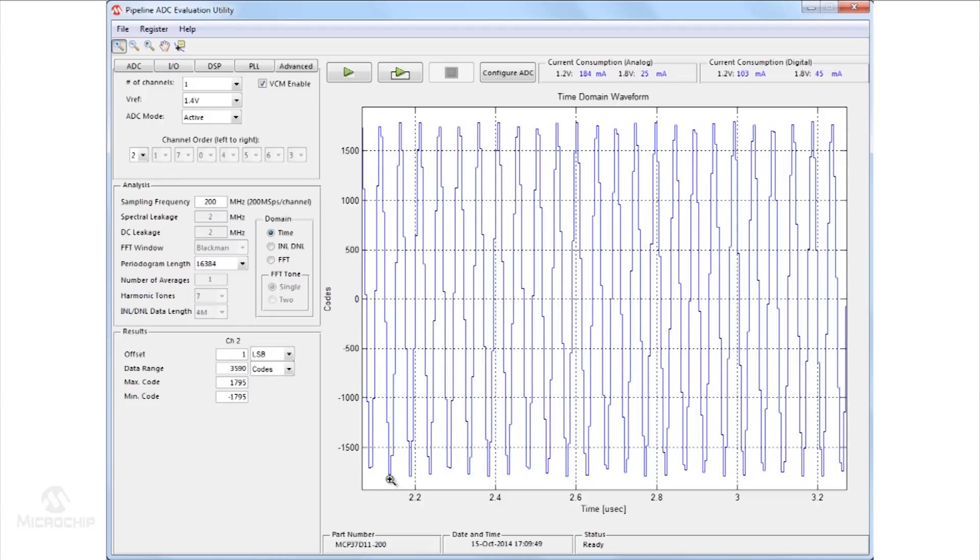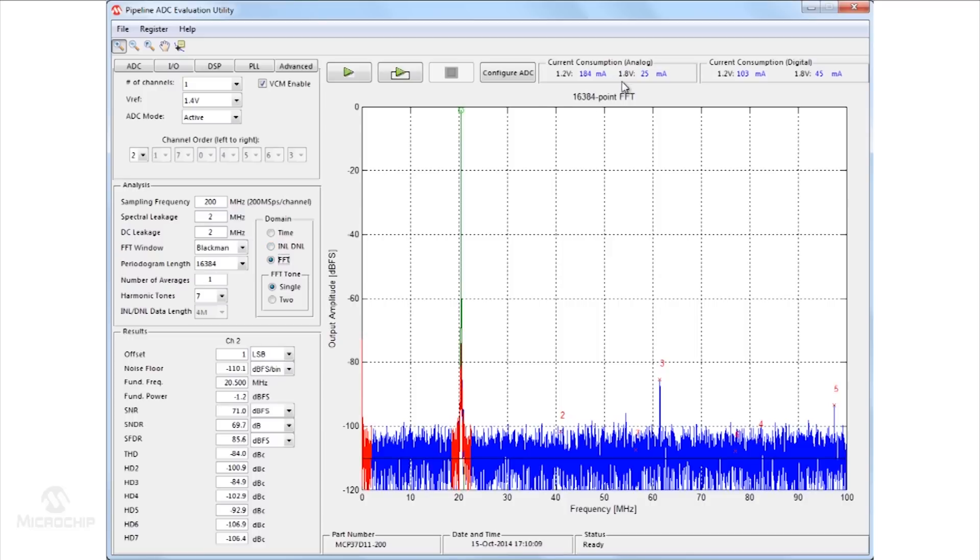To demonstrate the low power operation of the MCP37D11-200, current draw on each power rail is shown individually to allow for power monitoring during operation.